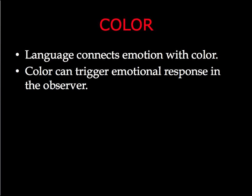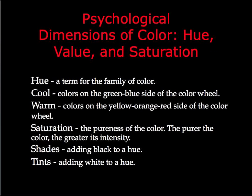There was also a college football coach who painted the visiting locker room Drunk Tank Pink to try to mess with the opposing team. When we talk about color, there are a few terms we should know: hue is the name of the color; cool colors are the blue-greens and violets; warm colors are the yellows, oranges, and reds; saturation is the pureness of the color — whether it's a straight hue or desaturated by adding gray to it. A completely desaturated color is gray, with no unique hue. Shades are made by adding black to a hue, and tints are made by adding white to a hue.